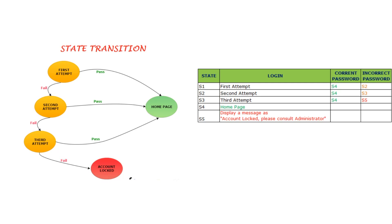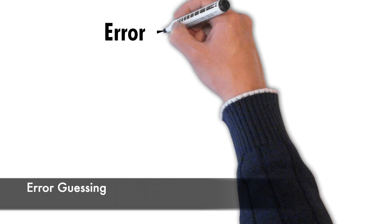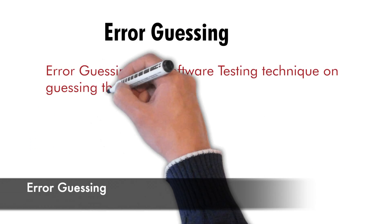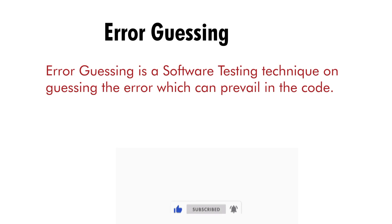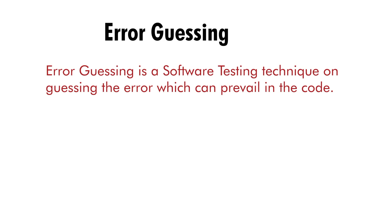The final type is error guessing. Error guessing is a black box testing method that relies on the previous experience of the tester. The software tester uses their past experience to determine where errors are likely to occur in the software. Test cases are then designed to find these errors and reduce the number of bugs.